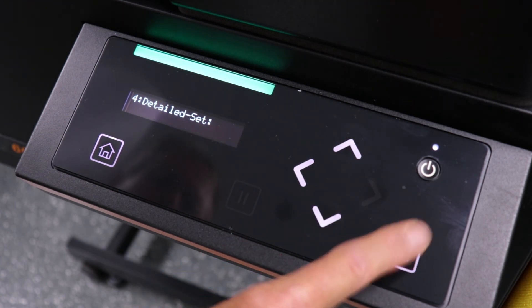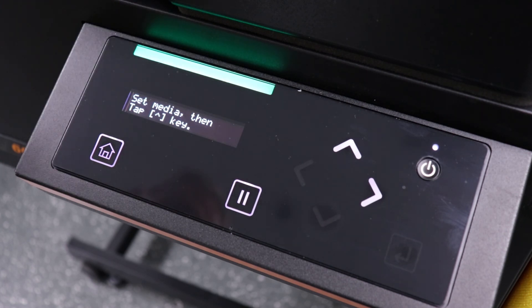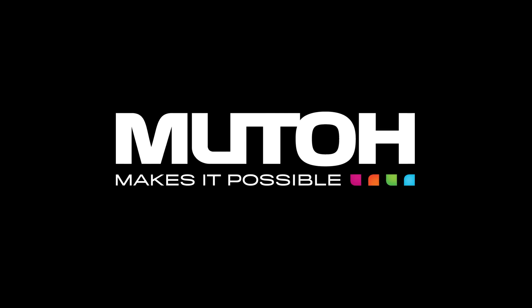This concludes the first procedure on setting up your machine to successfully print braille on the ExpertJet 461UF and 661UF. Continue on to learn about PG offsets and adjust prints. Thanks for watching.